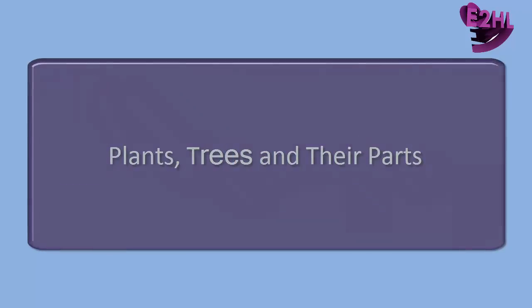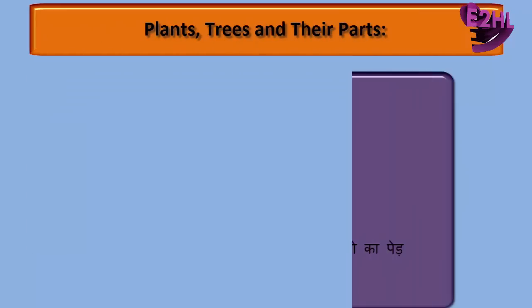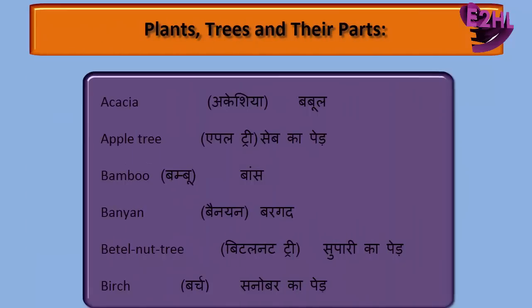Let's learn: Acacia — Babool. Apple Tree — Shev Kaped. Bamboo — Bans. Banyan — Bargad. Betel Nut Tree — Supari Kaped.